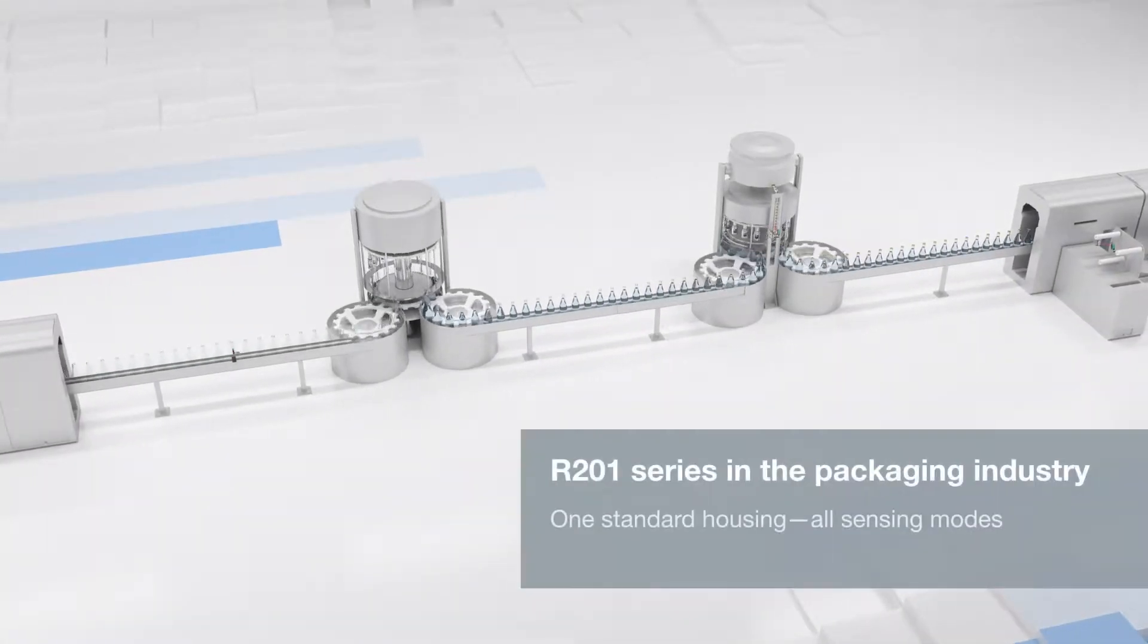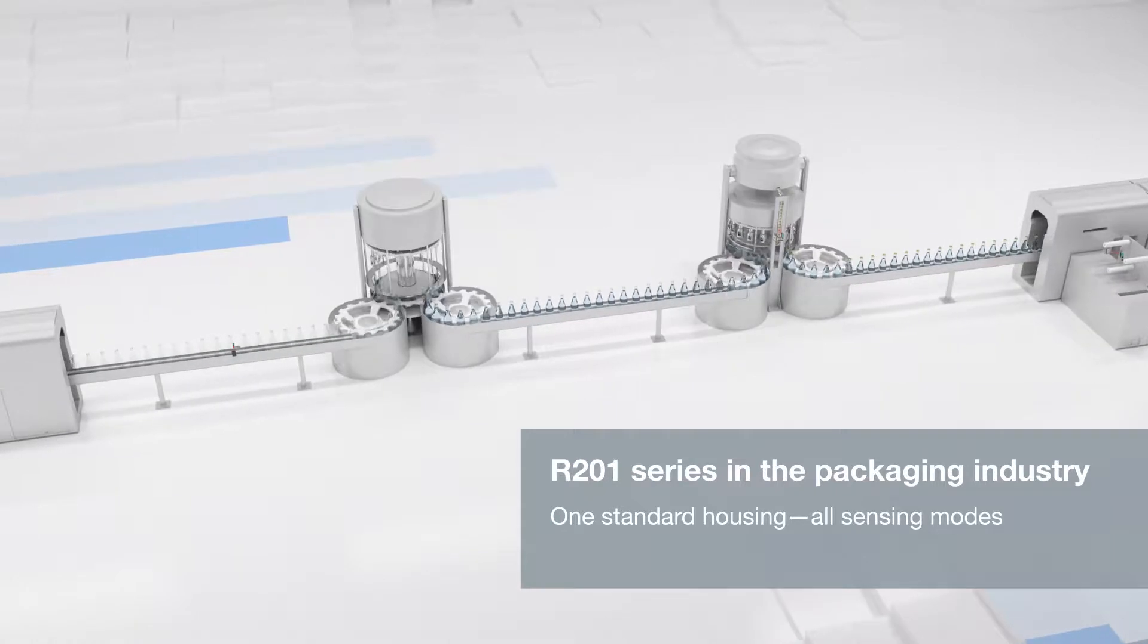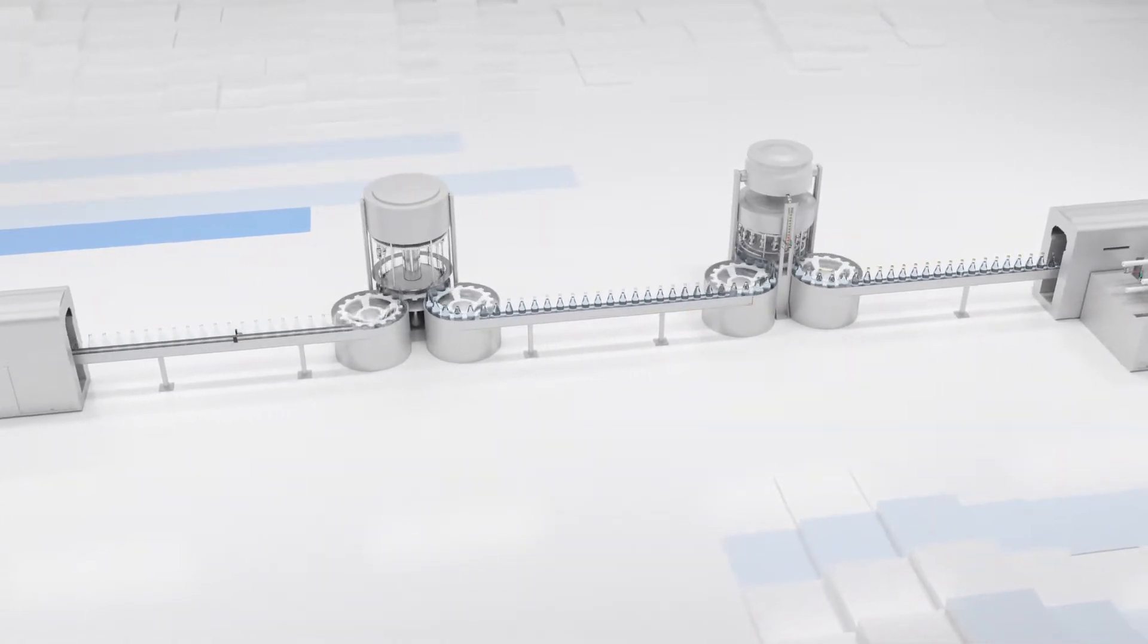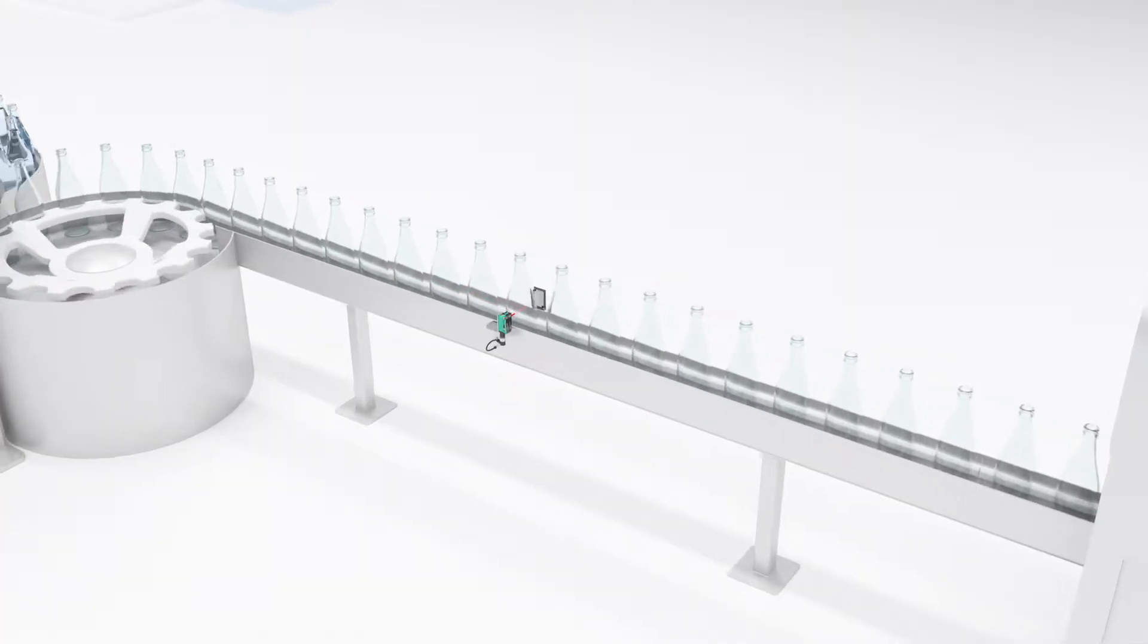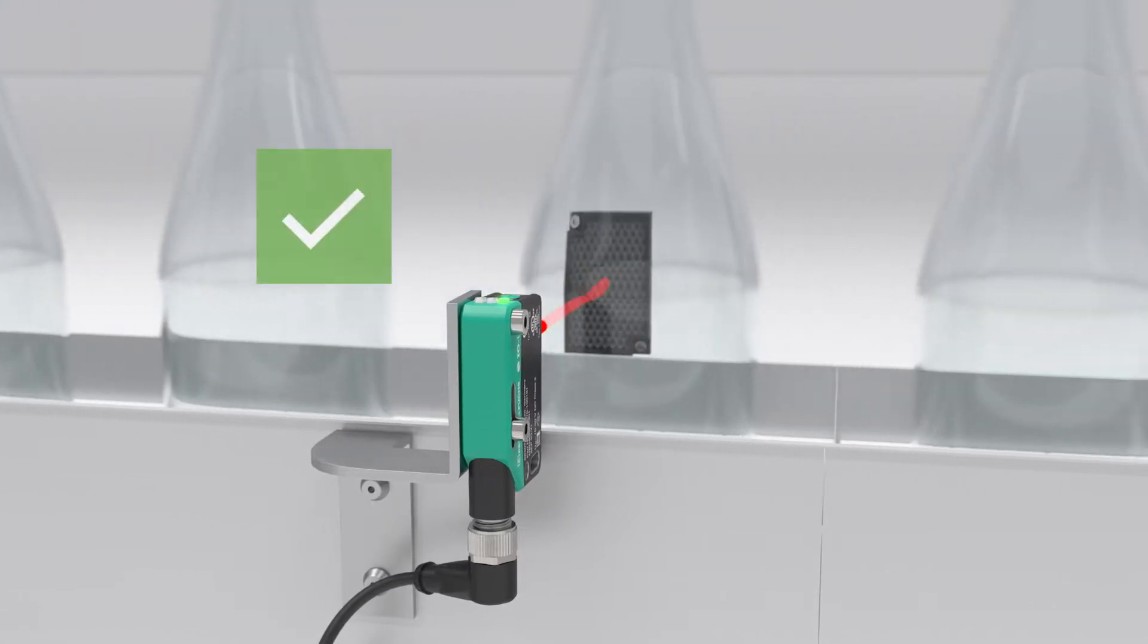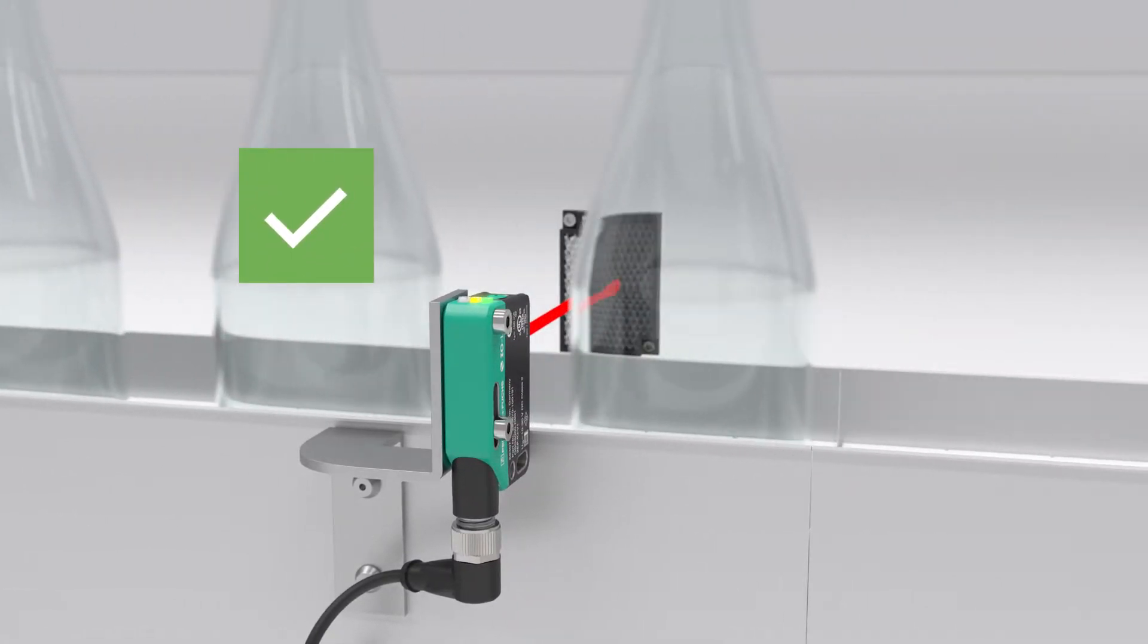Different sensor variants of the R201 series are used in bottle systems as well. R201 series retro-reflective sensors reliably detect clear glass, eliminating false trips and counting errors in bottling plants.